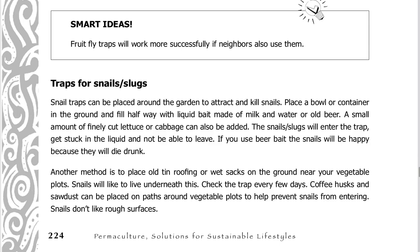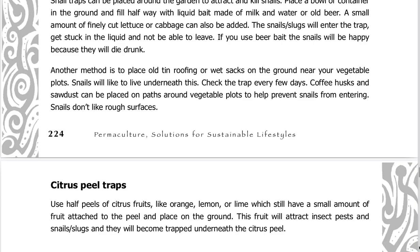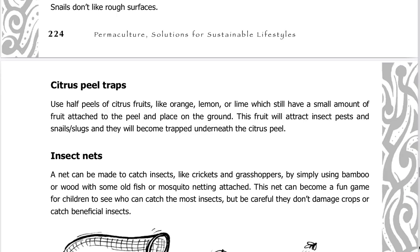Traps for snails and slugs. Snail traps can be placed around the garden to attract and kill snails. Place a bowl or container in the ground and fill halfway with liquid bait made of milk and water or cold beer — a small amount of finely cut lettuce or cabbage can also be added. The snails and slugs will enter the trap, get stuck in the liquid, and not be able to leave. Another method is to place old tin roofing or wet sacks on the ground near your vegetable plots — snails will like to live underneath this, so check the trap every few days. Coffee husk and sawdust can be placed on paths around vegetable plots to help prevent snails from entering, as snails don't like rough surfaces.